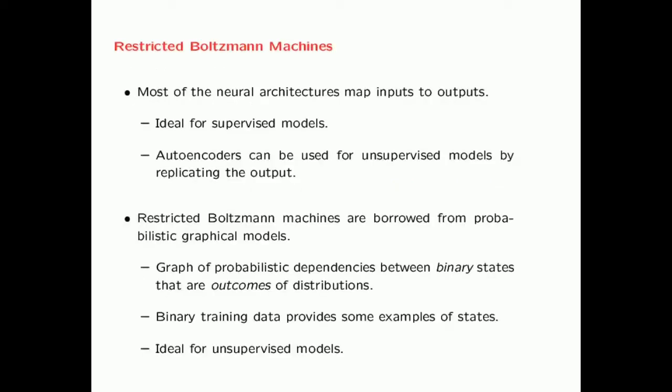Most of the neural architectures that we have seen so far map inputs to outputs. Such methods are ideal for supervised models in which outputs are used to learn the relationships to the inputs. However, these architectures can also be used for unsupervised models by replicating the output, and one example is the autoencoder. Restricted Boltzmann machines are a fundamentally different class of models.